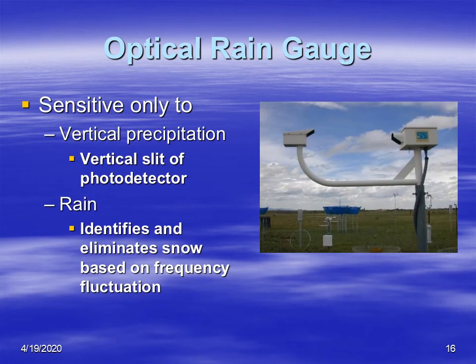The sensor is only sensitive to vertical precipitation. The way they do that is they have a vertical slit, so it is only looking at the precipitation that's falling vertically and not horizontally. Also, based on the frequency of scintillation or fluctuation of the beam, they can determine whether it's snow or rain.